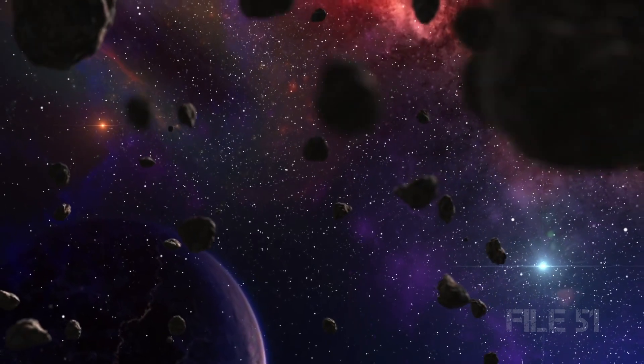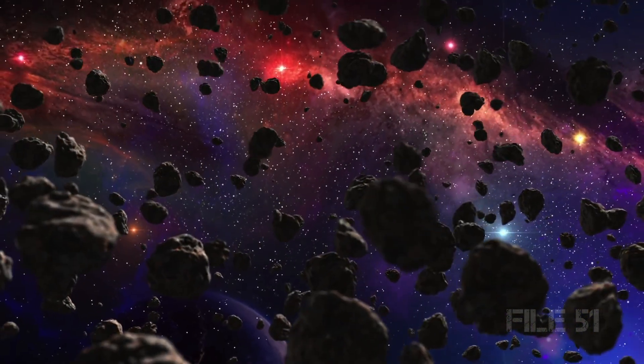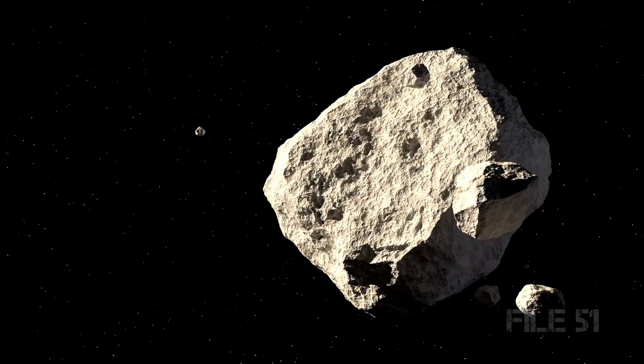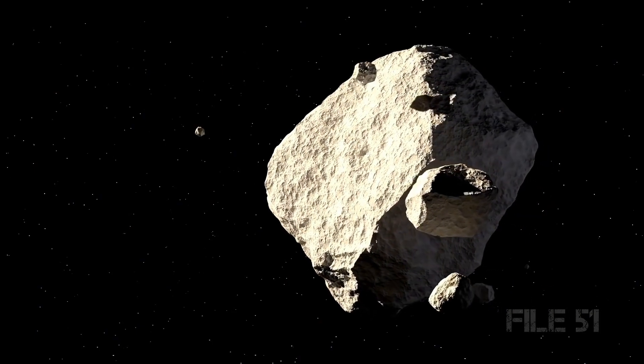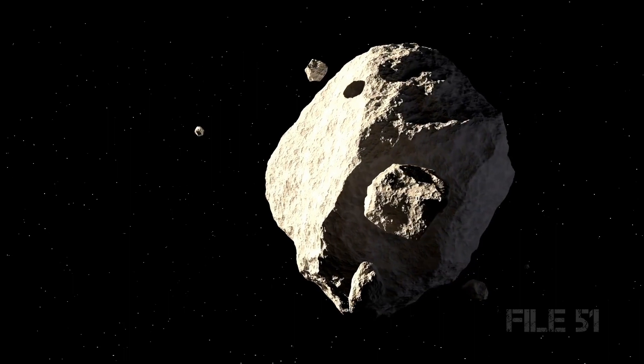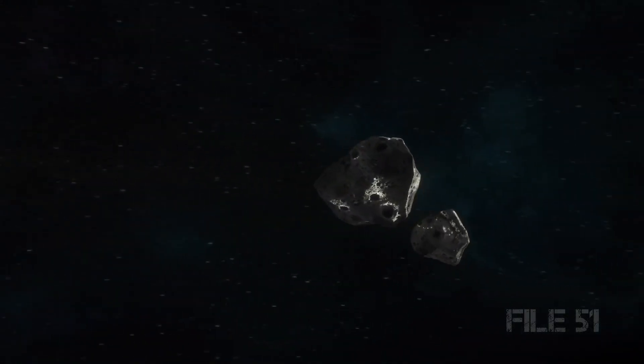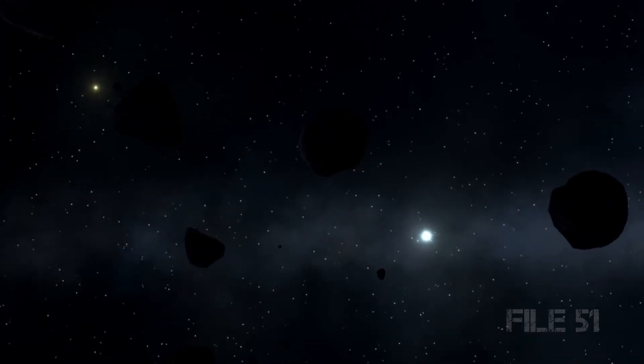But there are still asteroids and comets that have orbits that pass near Earth. The truly dangerous objects, those large enough to cause regional or global catastrophe when they hit, may appear once every few hundred thousand years. These are called near-Earth objects, or NEOs.